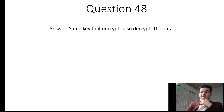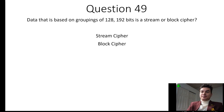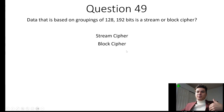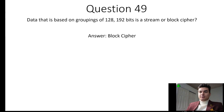The answer for Question 48 is: the same key that encrypts also decrypts the data. Question 49: Data that is based on groupings of 128 or 192 bits is a block cipher. Anytime it says 'in groupings of bits' like 128 or 192, you automatically know it's talking about a block cipher, because blocks are groups or sets of bits. A stream cipher would process bit by one. The answer is a block cipher.